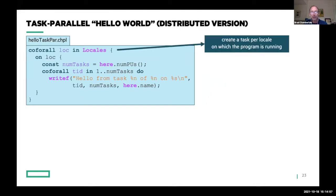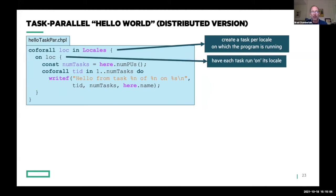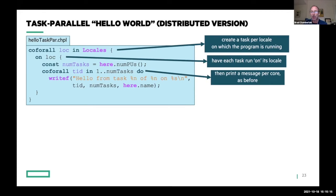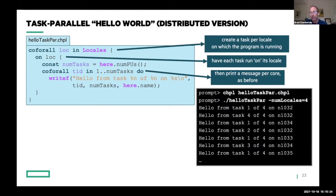With a fairly simple change I can turn this into a distributed program. I add an outer coforall loop iterating over the locales array to generate a task per locale, and use an 'on' clause to tell each task to run on its corresponding locale. At that point I've essentially created SPMD execution across the machine, and then execute the same coforall as before so each locale queries how many cores it has and prints a message per core — changing this from a shared-memory code into a distributed-memory code.